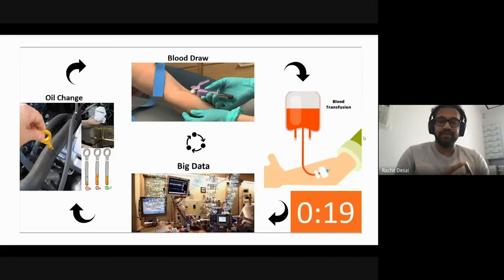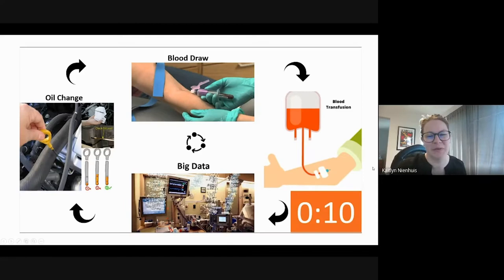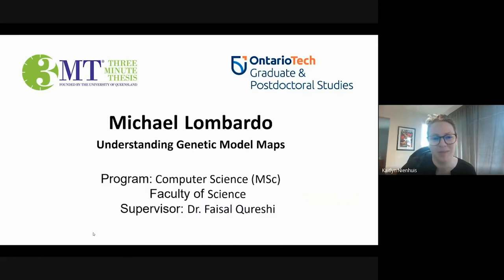Thank you, Rasheed. We'll give the judges a few moments to complete their scorecards. We're going to introduce our next participant, Michael Lombardo. He's pursuing his Master of Science in Computer Science, presenting Understanding Genetic Model Maps. Michael has always been involved in high-level sports and has achieved national championships multiple times. His life turned around when he discovered computer science. Who would have known that talent with a stick and typing go hand in hand? Please welcome Michael.